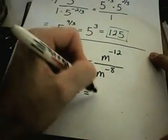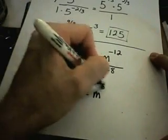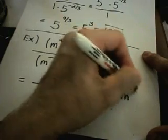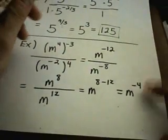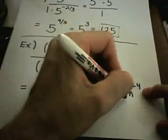And now, if I use my property, I've got m. I take the top power minus the bottom power. That will give me m to the negative 4th. But, oh no, now I've got another negative exponent.